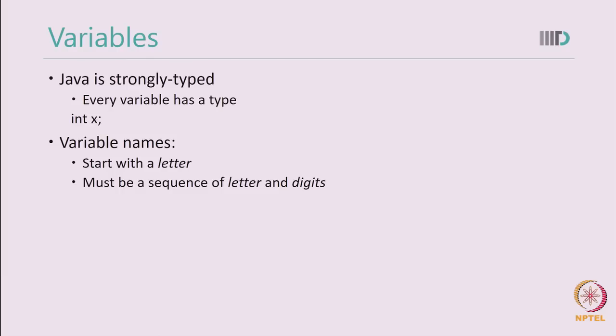Java is a strongly typed language, which means that each variable must have a type and each variable name must start with a letter. After the initial letter, it may include letter or other digits.